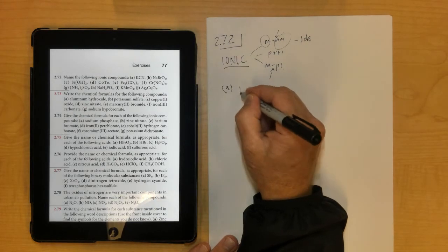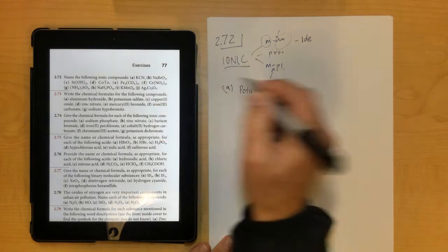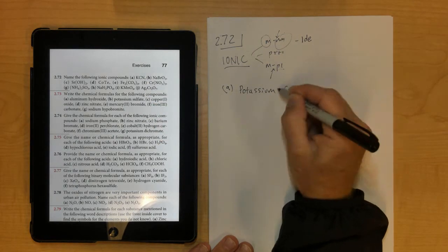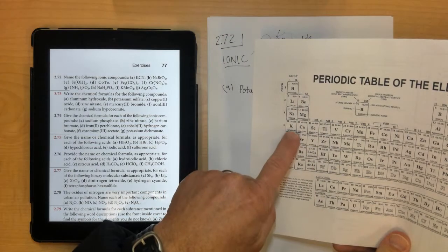72, letter A, is potassium, and then CN is the polyatomic ion cyanide. No Roman numeral needed for that one because potassium is in group 1 or 2, and remember 1 and 2 doesn't need Roman numerals.